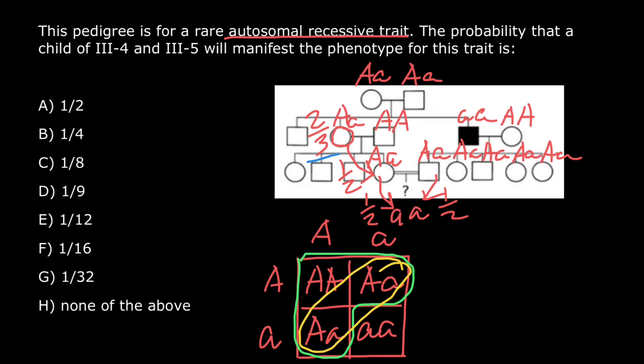This female here has probability of being a carrier 2 thirds. So 2 thirds times 1 half, times 1 half, times 1 half.